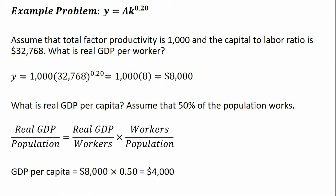So we're just going to evaluate this production function, this per worker production function, at these values. So making our substitutions, A is 1,000. For lowercase k, the capital-labor ratio, we're putting in 32,768.